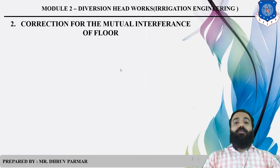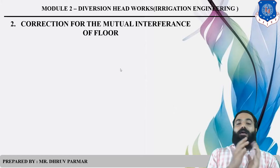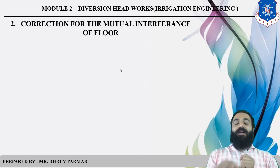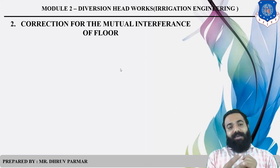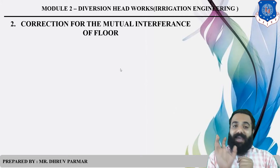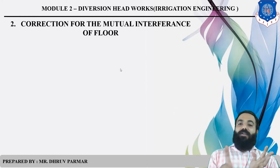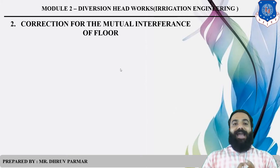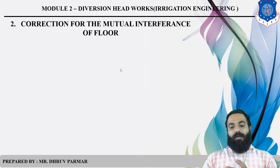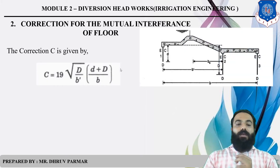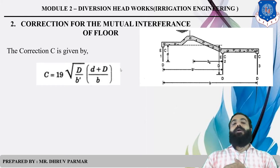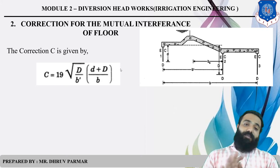The second correction is for mutual interference of pile — this is the most important one. When two piles are given, such as upstream and intermediate, or intermediate and downstream, or upstream and downstream together, the mutual interference correction is calculated. But when only an upstream pile or only a downstream pile is given, there is no need to correct for mutual interference. The basic formula is: 19 times the square root of D divided by D-dash, multiplied by the bracket (D plus D) divided by B.